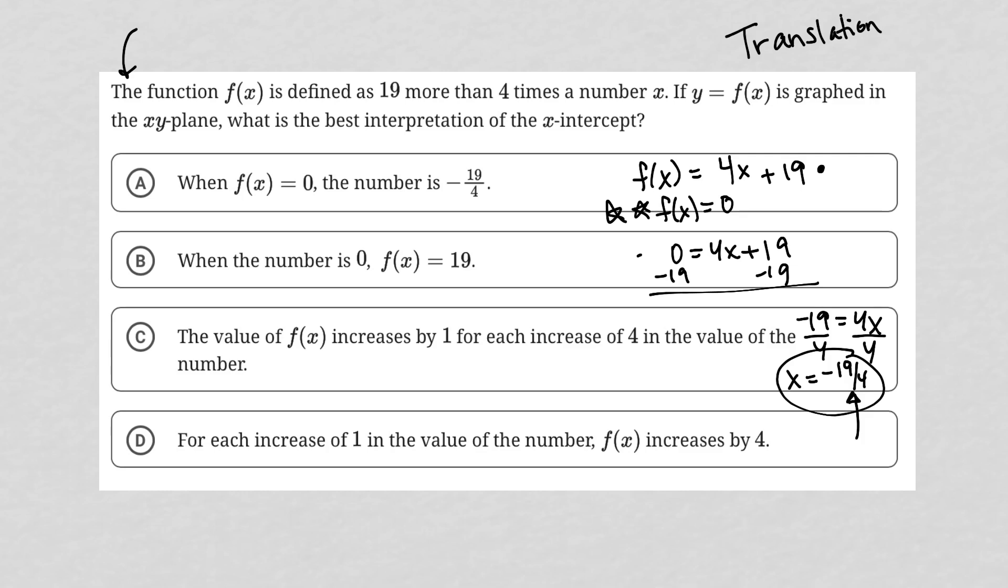So let's see. Choice A says when f of x equals 0, the number is negative 19 fourths. Looks good to me. I like it. I'm going to look at the other ones, but I'm pretty sure choice A is correct. Choice B, when the number is 0, which number? The number. No, that's saying that when x is 0. That's not true. The x-intercept is when f of x is 0. So B is gone.